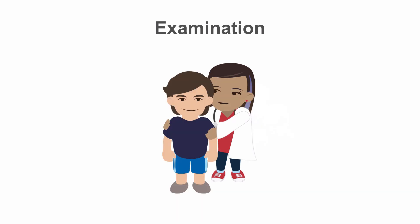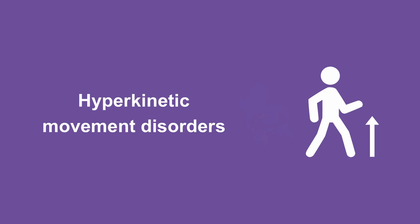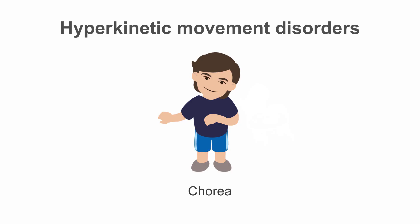You should also test for retropulsive tendencies with the pull test. Hyperkinetic movement disorders are characterized by an excess of involuntary movement that we can classify by type. Chorea refers to brief, abrupt, involuntary jerking movements.